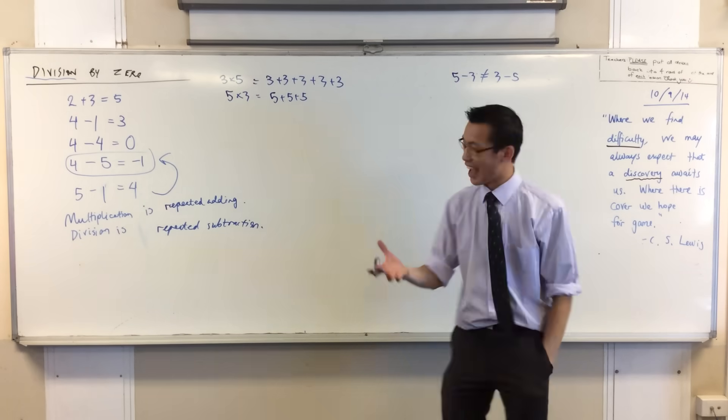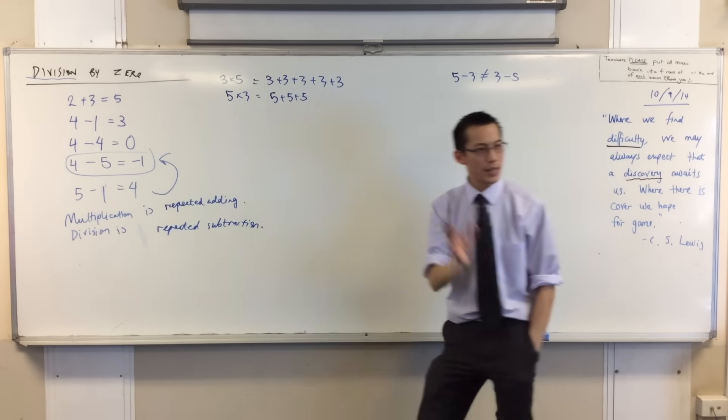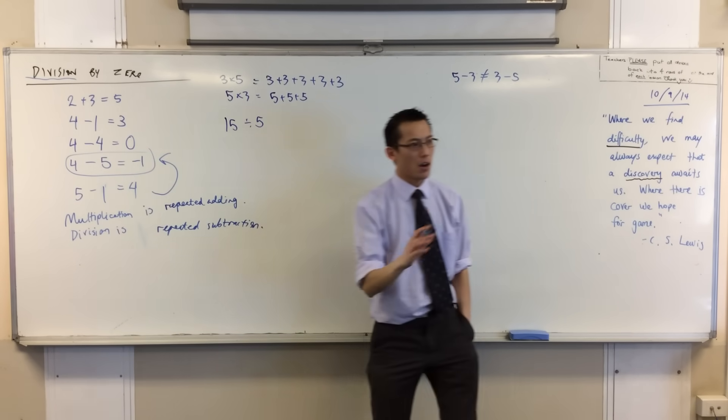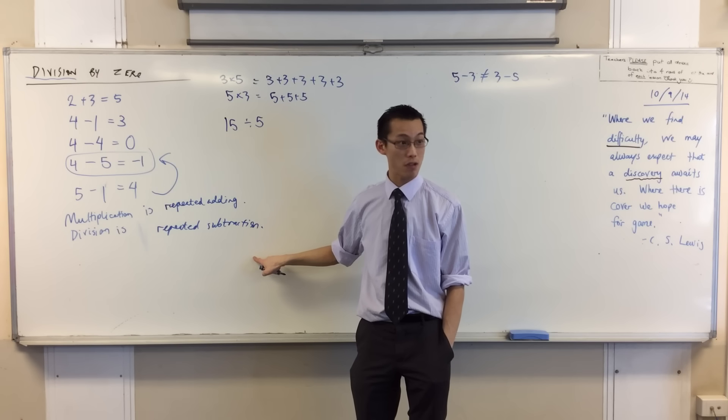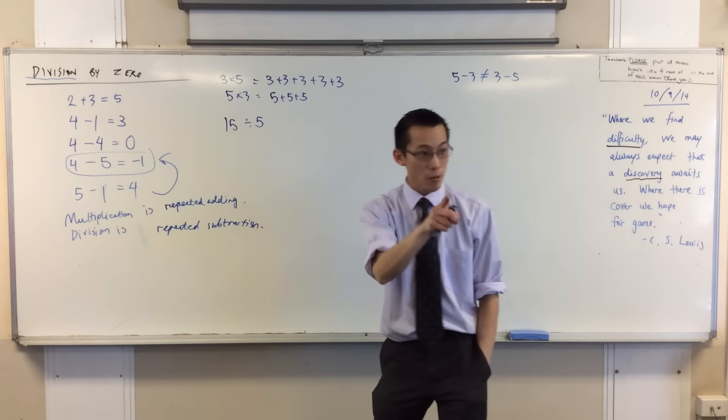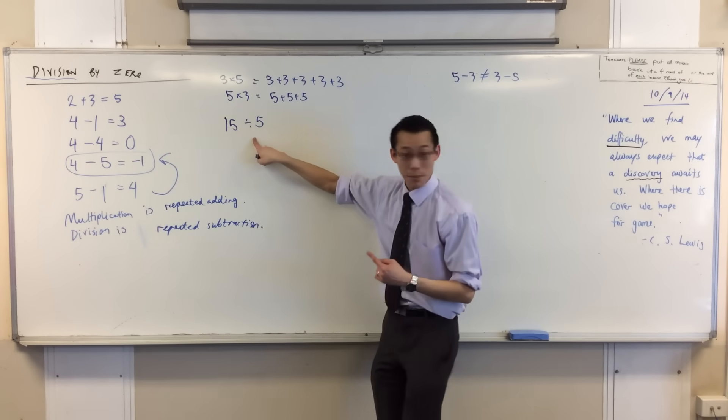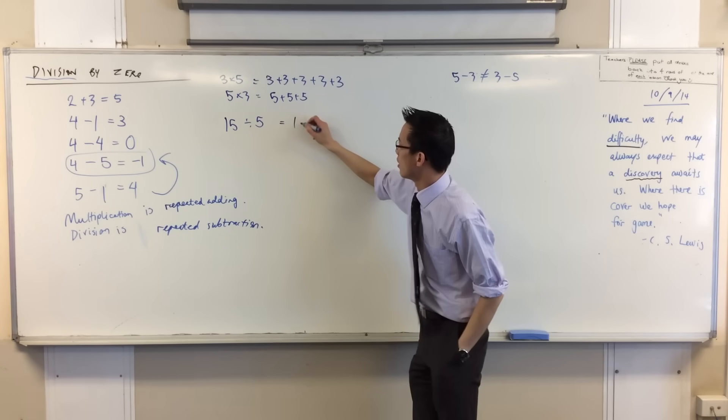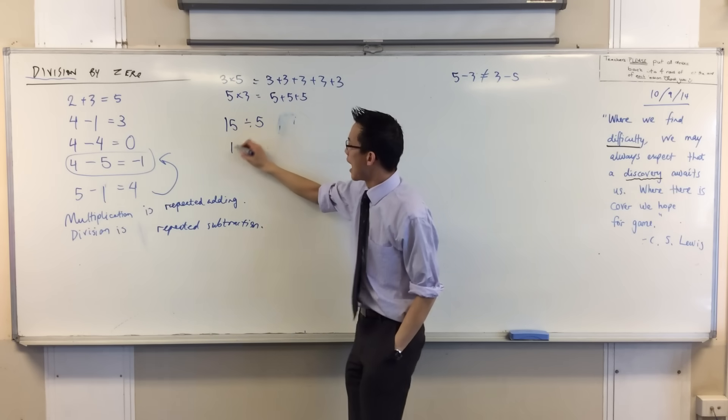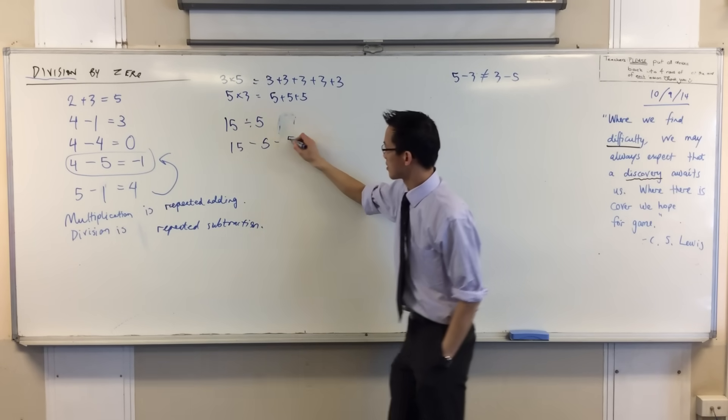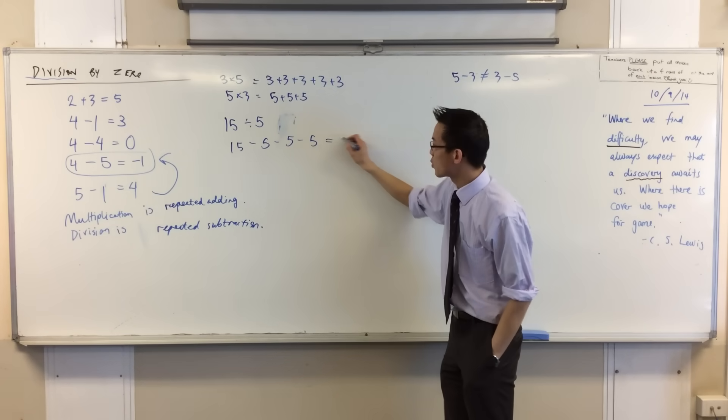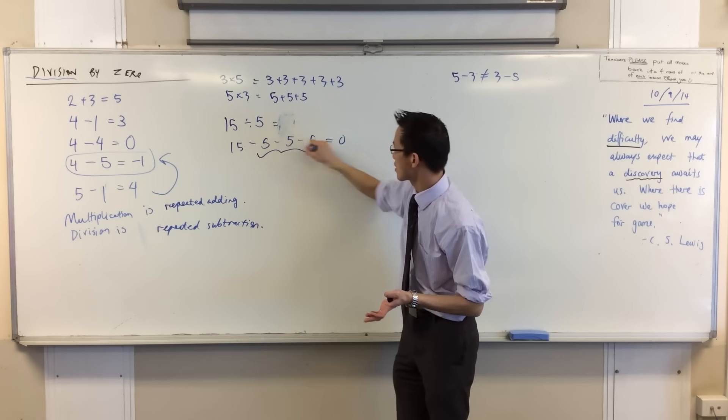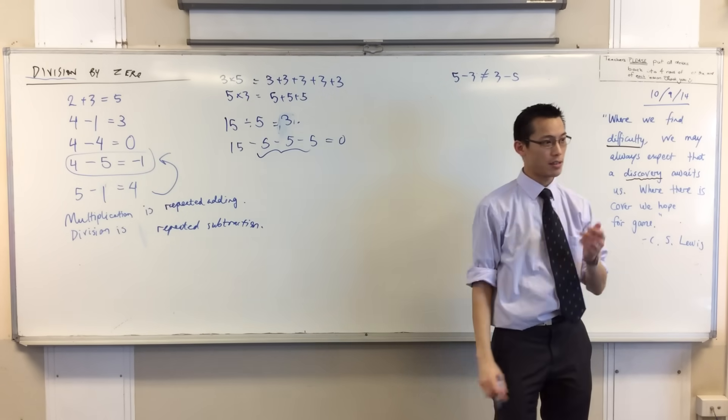So it works a little different to this. For instance, if I said 15 divided by 5, what does that actually mean? In what way is it repeated subtraction? What it means is how many times can I subtract five before I have nothing left? And the answer is, I can do it three times. I can do it once, twice, three times, and that's when I have nothing left in my set. So that's why three times, that's the answer.